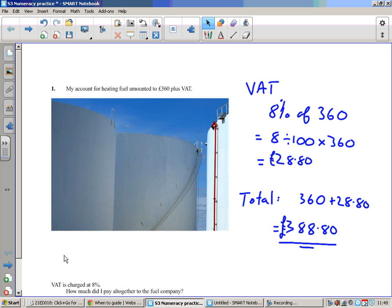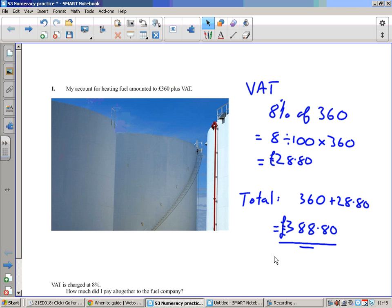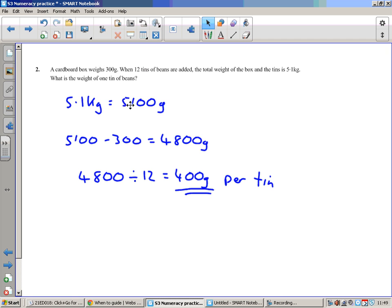Question number one: My account for heating fuel amounted to £360 plus VAT, and that is charged at 8%. Normally it's 20% on fuel, it's only 8%. How much do they pay altogether to the fuel company? So work out 8% of £360, that's £28.80. It's value-added tax, you got to add that on to the actual price you should be paying. Comes out with £388 pound ATP.